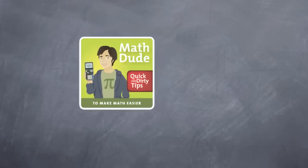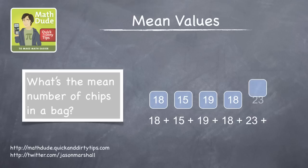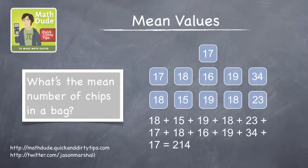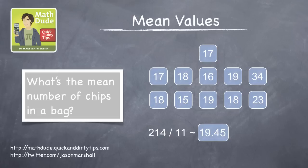In the podcast, we calculated the mean number of chips in a bunch of potato chip bags. We imagined we had 11 imaginary bags of chips, and we calculated the mean by adding up all the chips in all the bags, and then dividing this total by the number of bags. The resulting number is the mean, which in our problem turned out to be about 19.45. That squiggly line there means approximately.